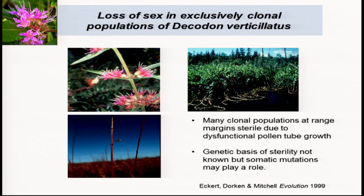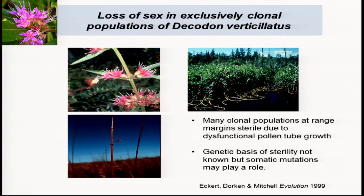One good example is work that Marcel Dorkin and colleagues have done on Decodon, or swamp loosestrife — related to the invasive weed purple loosestrife. At the margins of the range in Ontario and Quebec, populations are largely sterile. The sterility — illustrated by just one fruit on an inflorescence that should be covered in fruit — is nothing to do with these plants not getting pollinated due to marginal conditions. When you do hand pollinations, these plants are in fact genetically sterile. We have these sterile populations that are essentially entirely clonal at the margins of the range, and the genetic basis of this sterility has not been worked out.